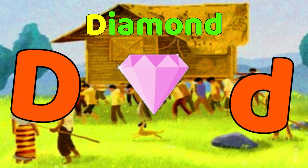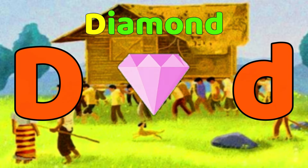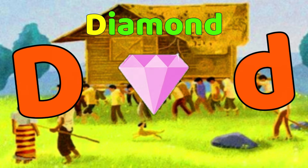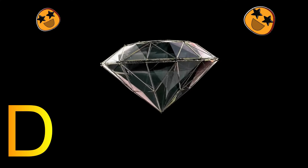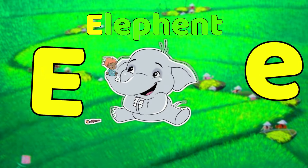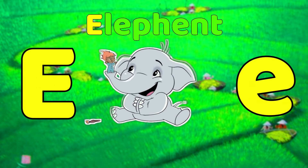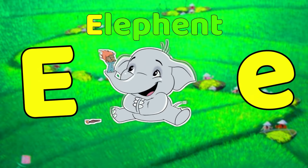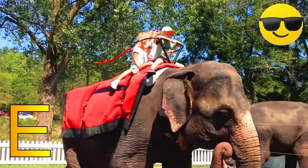D is for diamond, D-D-diamond. E is for elephant, E-E-elephant.